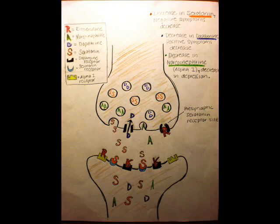I'll show you a diagram of how risperidone works on the brain and its neurons. Risperidone acts as an atypical antipsychotic, meaning that it works on both the serotonin and dopamine levels in the brain. Here is a diagram of a synapse, a space in which two neurons communicate with different levels of neurotransmitters.